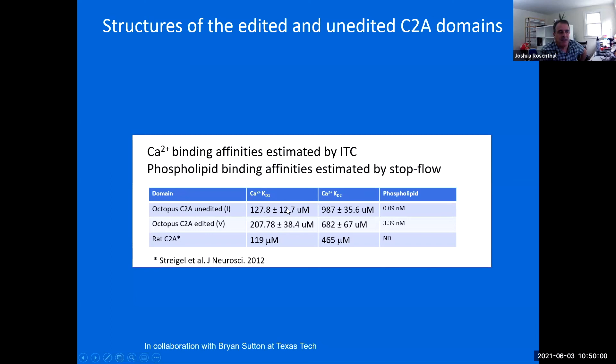He estimated calcium binding affinities by ITC and phospholipid binding by stop flow experiments. And there are two binding sites for calcium and found that the editing basically reduced affinity for calcium by about half at one of the sites, and then slightly increased to another site. What was more interesting though was the phospholipid binding where we see that the edited version has a much lower affinity for phospholipid. So it goes down about 40 fold.